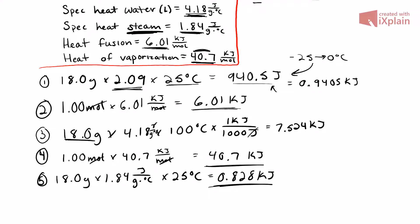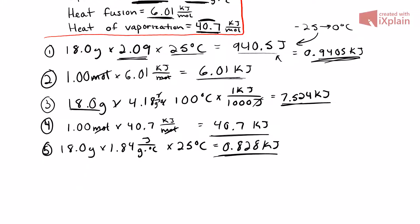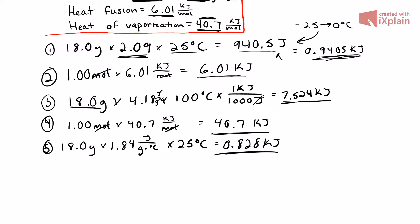Now that we have all our energy values, we add them together: 0.9405 + 6.01 + 7.524 + 40.7 + 0.828, which gives us a total of 56.0 kilojoules. That is our final answer.